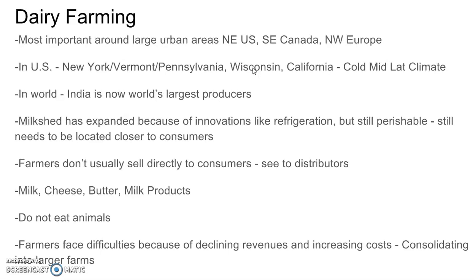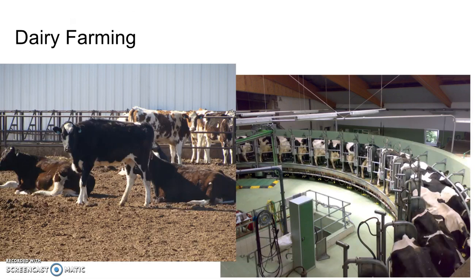There is a phenomenon called the milkshed — the distance before the milk will spoil. This milkshed has expanded due to innovations like refrigeration, but dairy products are still perishable and need to be located closer to consumers. Products include milk, cheese, butter, and other milk products. Dairy farmers do not eat the animals. Farmers face declining revenues and increasing costs, leading to consolidation into larger farms.